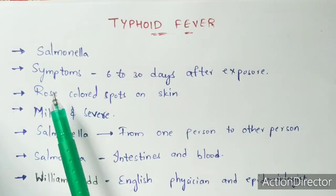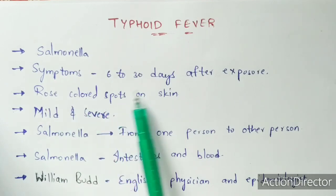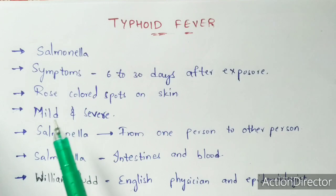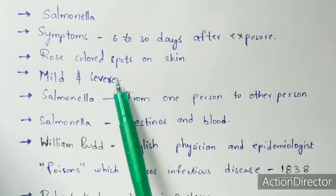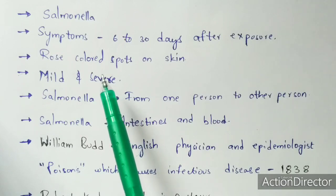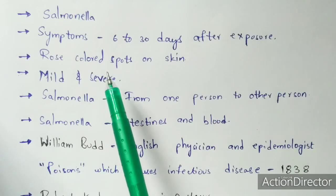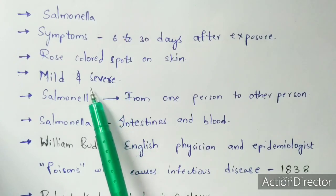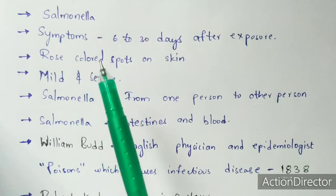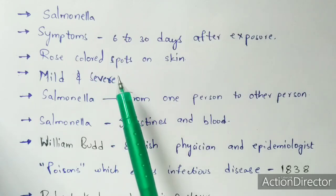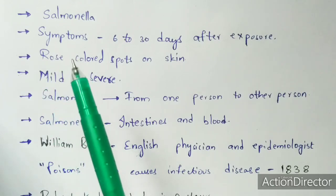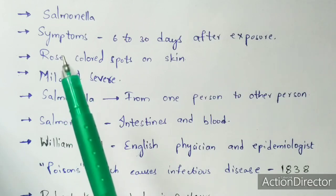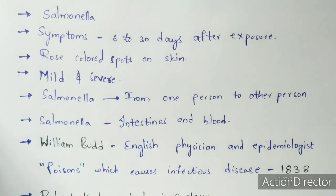The main symptom visible in white-skinned people is rose-colored spots on the skin. This fever can be seen in both mild and severe conditions. Mild condition can be easily cured, but severe condition requires hospital admission. Mild typhoid fever presents with 99 to 100 degrees Fahrenheit, whereas severe typhoid fever can be up to 104 degrees Fahrenheit.